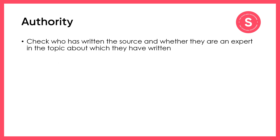Assessing the authority of a source is also very important. Who has written a source and where it has been published tells you a lot about whether the information in the source is likely to be trusted. In fact, before discarding a source that you think is inaccurate, check to see who wrote it and where it has been published — it may be the case that you think something is incorrect, but if it has been written by someone with authority on the topic, you may be wrong. Analysing the reference list is another way of assessing the authority of a source, and we'll come back to this later.